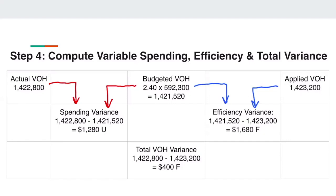Finally, to find total variable overhead variance, subtract actual variable overhead from applied variable overhead. When you subtract the two numbers, you get $400F. Since it is negative, it is favorable and we place an F beside it. We do not include the negative sign.